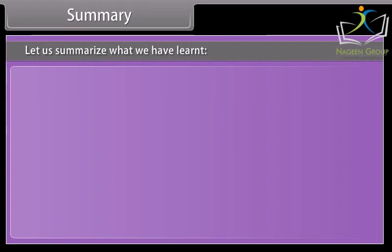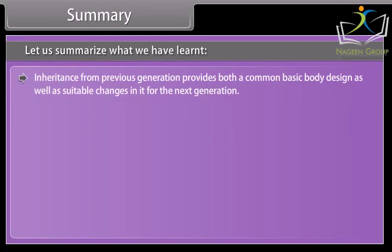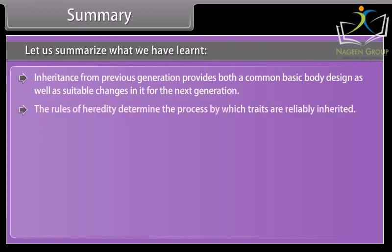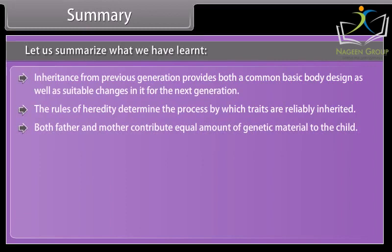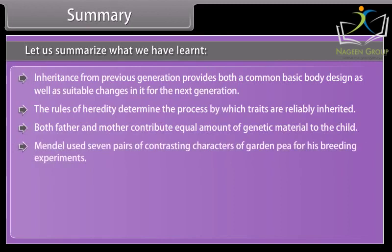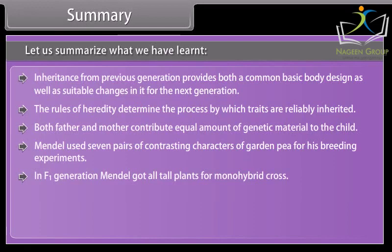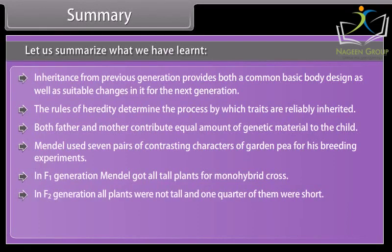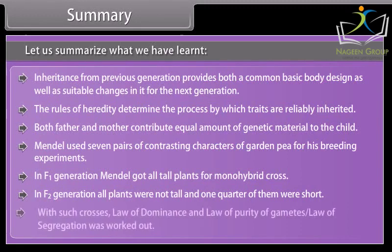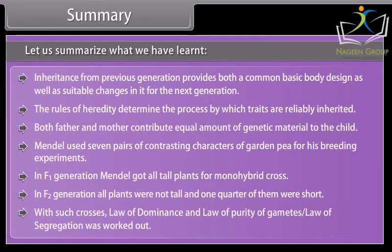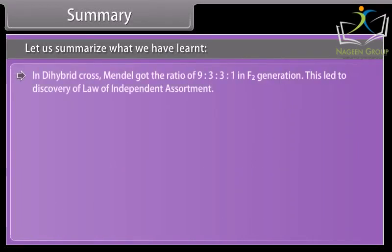Let us summarize what we have learned. Inheritance from the previous generation provides both a common basic body design as well as suitable changes in it for the next generation. The rules of heredity determine the process by which traits are reliably inherited. Both father and mother contribute equal amounts of genetic material to the child. Mendel used seven pairs of contrasting characters of garden peas for his breeding experiments. In F1 generation, Mendel got all tall plants for monohybrid cross. In F2 generation, all plants were not tall and one quarter of them were short. With such crosses, the law of dominance and law of purity of gametes — also called law of segregation — was worked out. In dihybrid cross, Mendel got the ratio of 9:3:3:1 in F2 generation, which led to the discovery of the law of independent assortment.